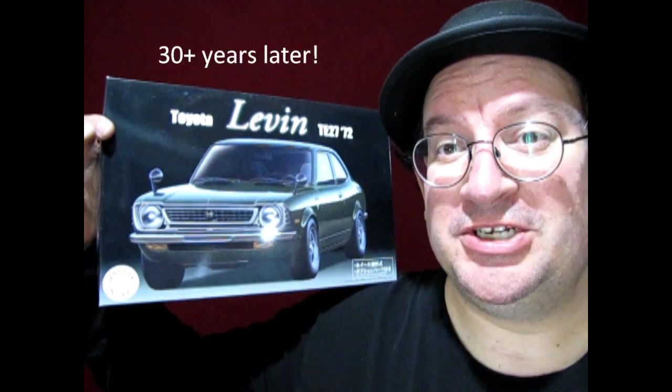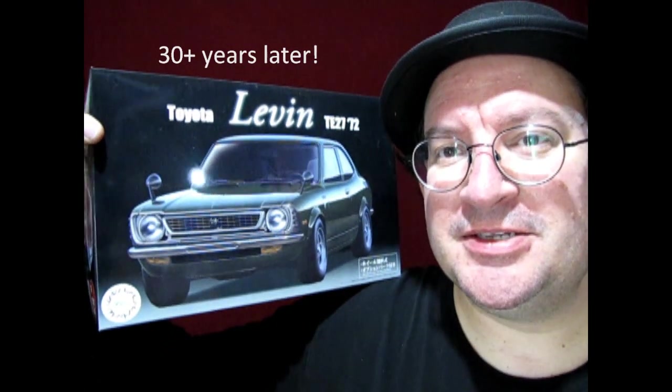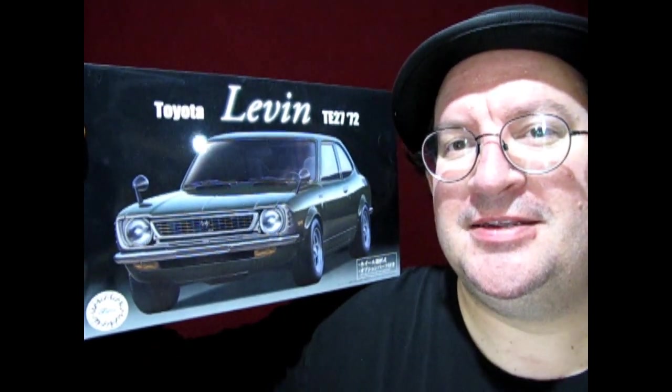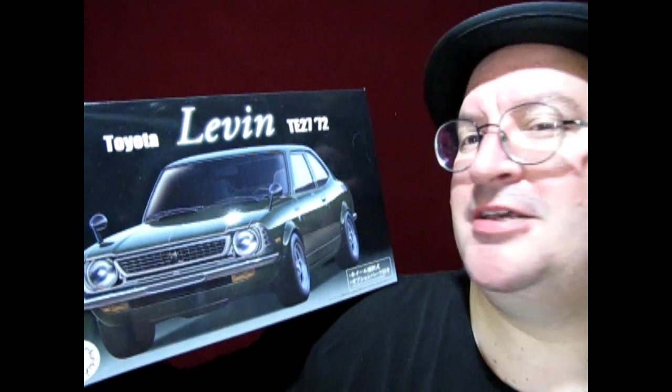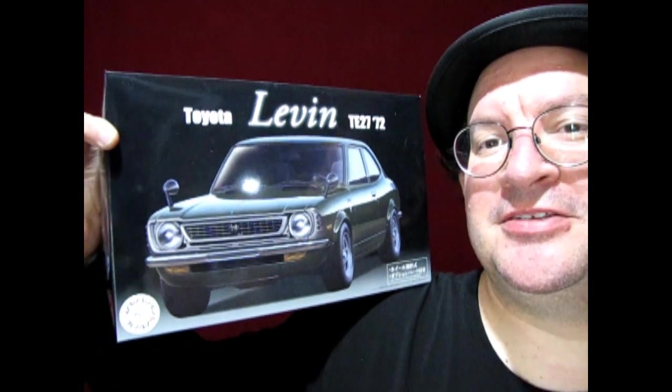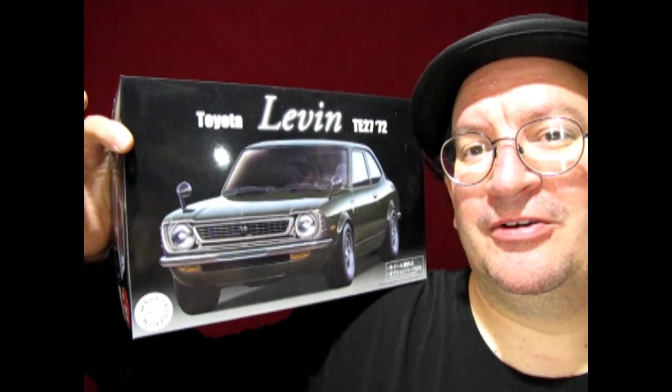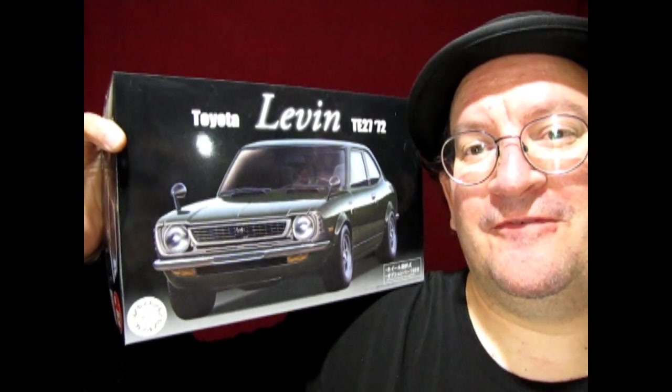So this is the Fujimi kit. This is a 1972 Toyota 11 TE27. Now, this is what the car was known as in Japan, but over here, of course, it was a Toyota Corolla SR5.